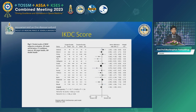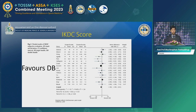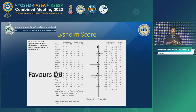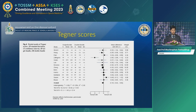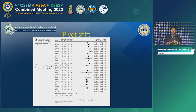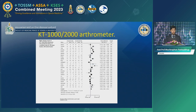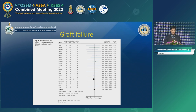In every knee score in this review literature, including IKDC score, Lysholm score, and Tegner score, results favoured the double bundle. The pivot shift test favoured the double bundle. Anterior laxity measured by KT-1000 and KT-2000 still favoured the double bundle. Graft failure rates were not different between single and double bundle, and osteoarthritis incidence was also not different.